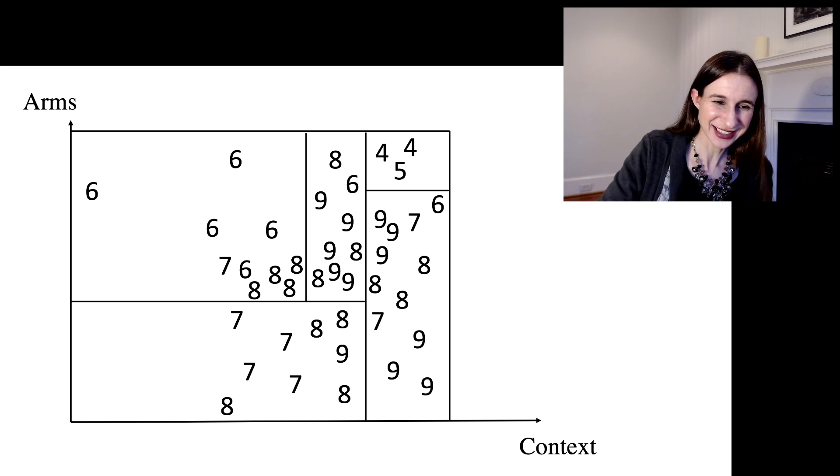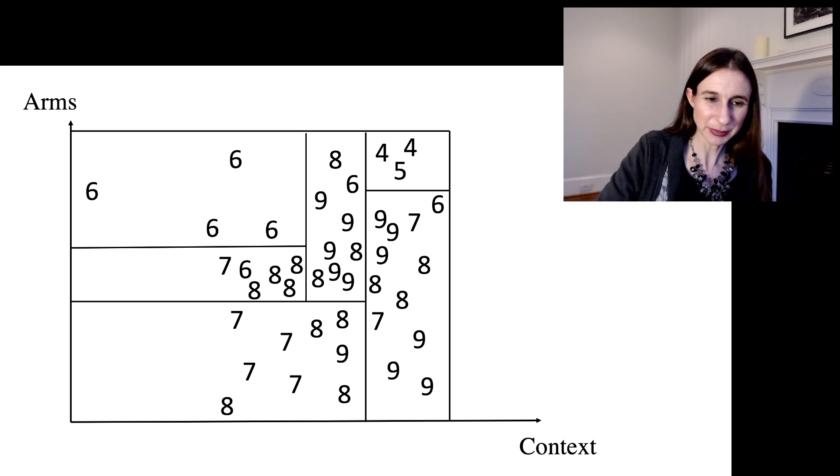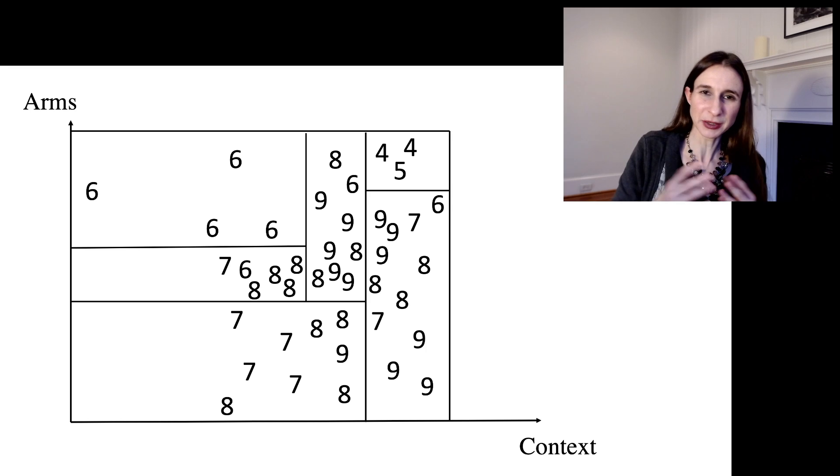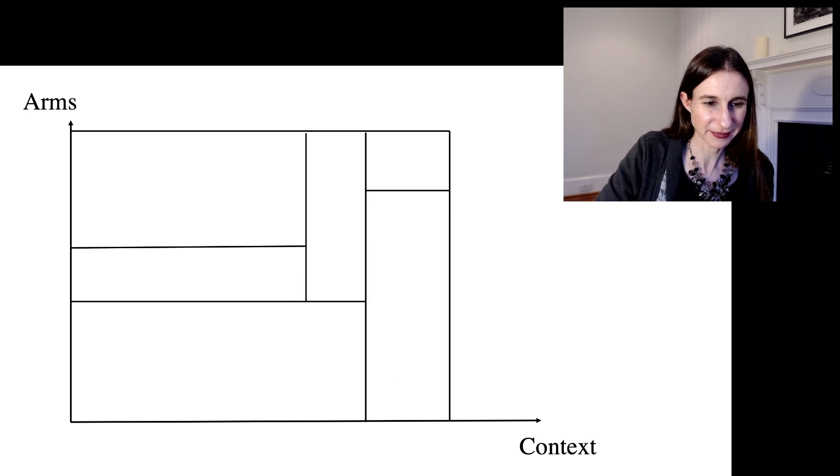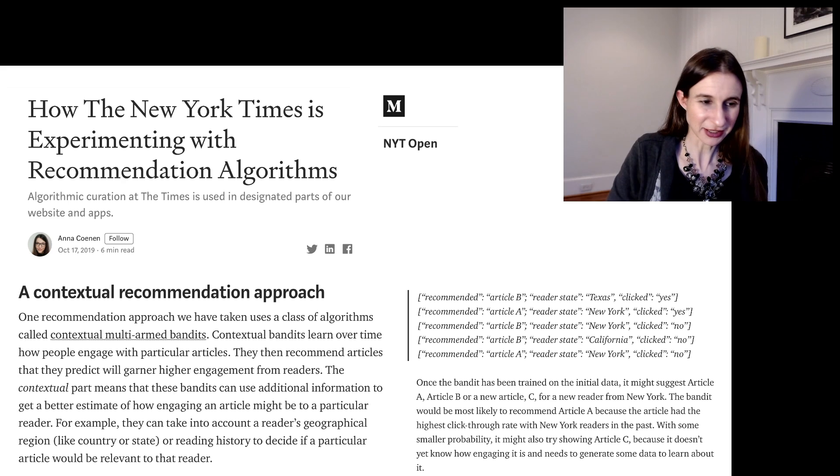So I can keep doing this, and any bin that I'm curious about, I draw more and more arms, and then keep going until I have a really good idea which bins have the best arms for each context. We'll keep going until we have the best arm for each context.